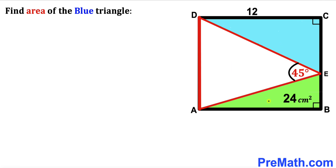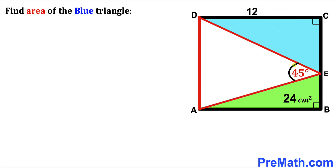The area of this green triangle is 24 centimeters squared. The side length CD of this rectangle is 12 centimeters. Furthermore, angle AED is 45 degrees. Our task is to calculate the area of this blue shaded triangle CDE.